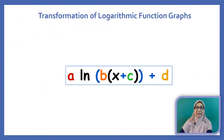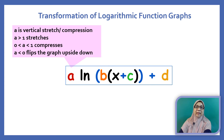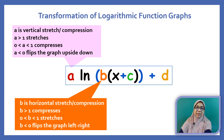The transformation rules for logarithmic function graphs are as follows. A is the vertical stretch or compression — when A is greater than 1, the graph is stretched; when A is a fraction, the graph is compressed; when A is negative, the graph is flipped upside down. B is the horizontal stretch or compression — when B is greater than 1, we compress; when B is a fraction, we stretch; when B is negative, we flip the graph left-right.